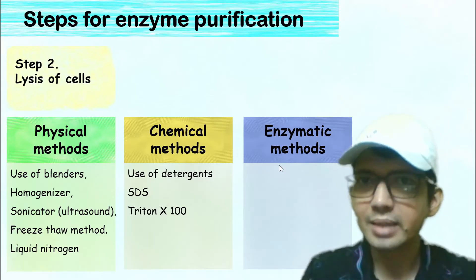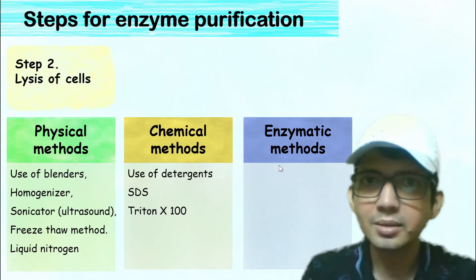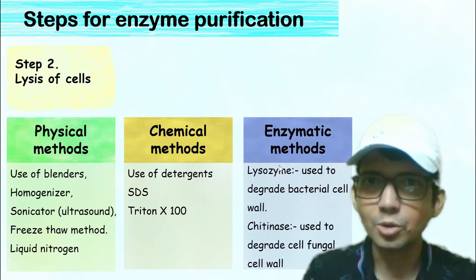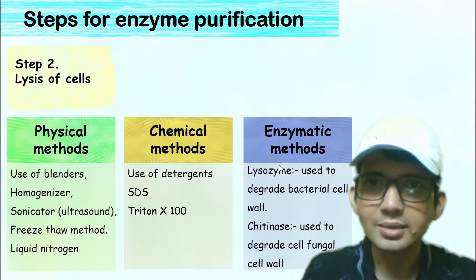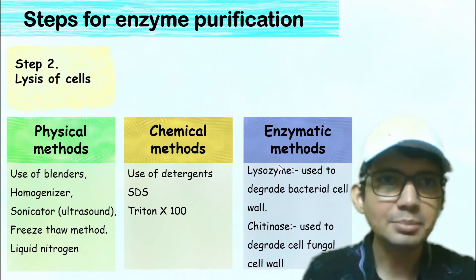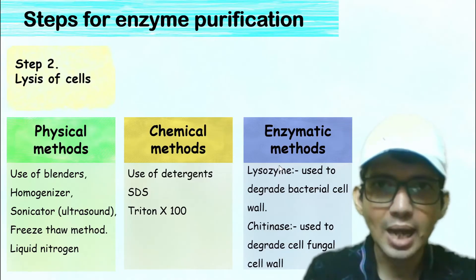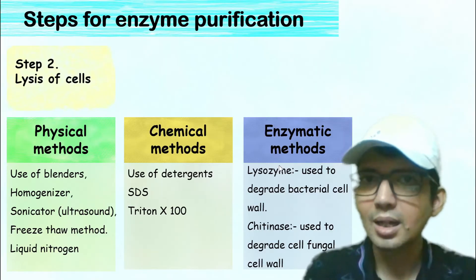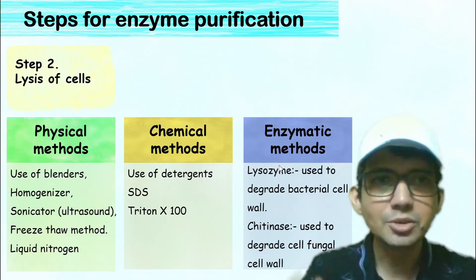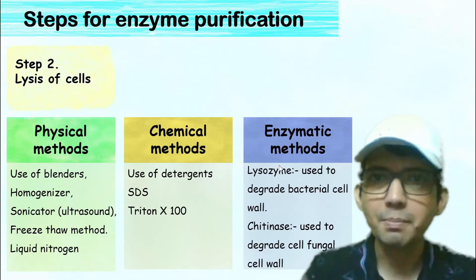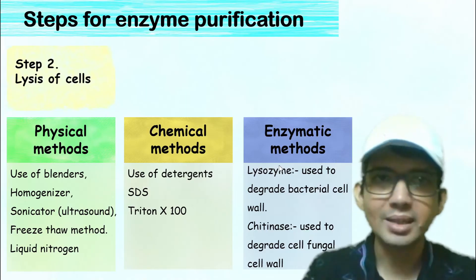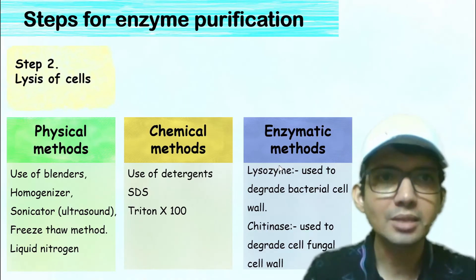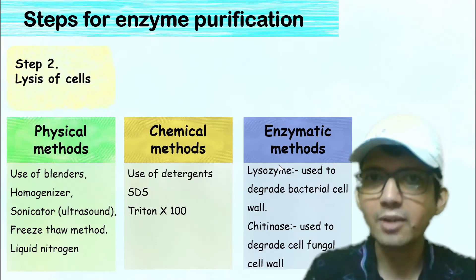Besides physical and chemical methods, enzymatic methods are also used. For this, enzymes like lysozyme and chitinase are used. Lysozyme is used to break bacterial cell walls, whereas chitinase is used to break fungal cell walls.